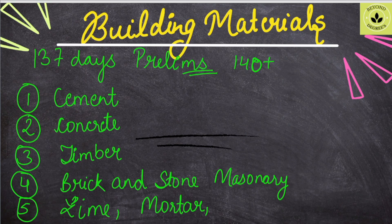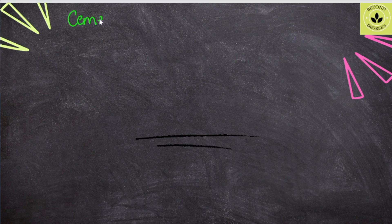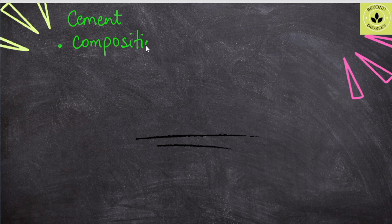Now we will talk about cement in detail. The most important topic — what is cement? We cannot leave cement or concrete. In cement, there is a composition: lime, magnesium, silica, alumina, and all the components. What is the composition of cement? After composition, we have to study the Bogue compounds, which is very important.